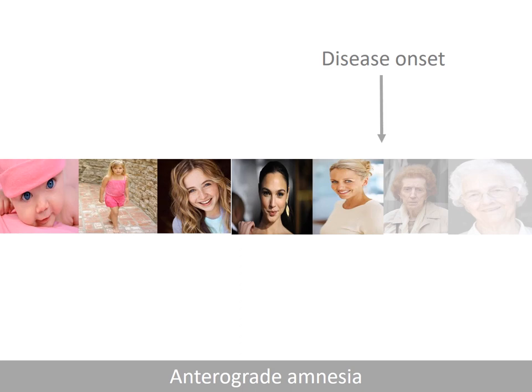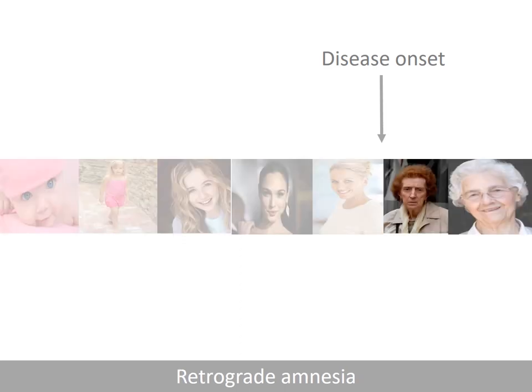This tendency is called anterograde amnesia — amnesia of the future. However, after some accidents, people sometimes forget past memories as well, even memories that were quite entrenched and consolidated — a problem often depicted in movies. They might forget their family or even their name, though they typically retain their skills. This is called retrograde amnesia, or forgetting about the past, and it's typically only temporary. Retrograde amnesia can also be ascribed to damage to the hippocampus as well as other regions, such as the temporal lobes.